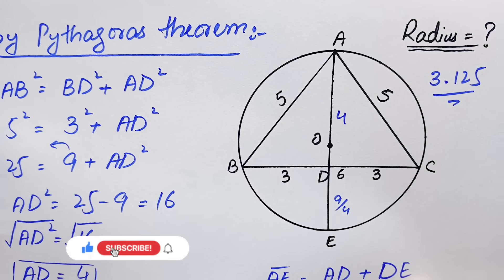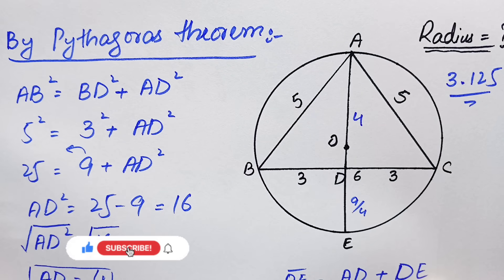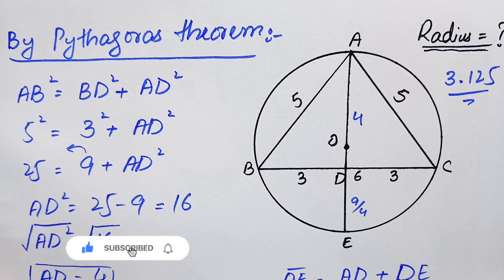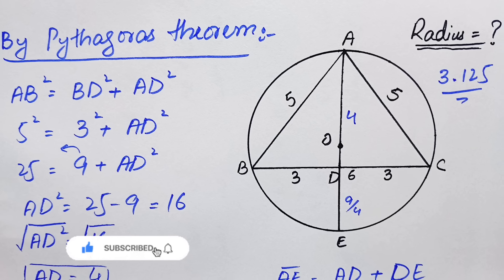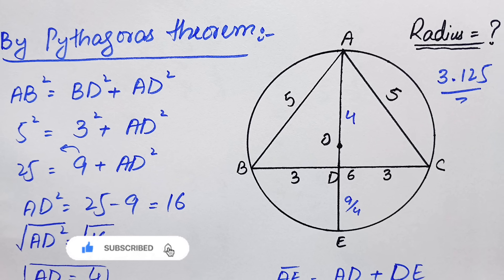So finally the radius of this circle is 3.125 units, which is our target. Don't forget to subscribe to my YouTube channel for more interesting and step-by-step math videos. Thanks for watching, take care, bye bye.